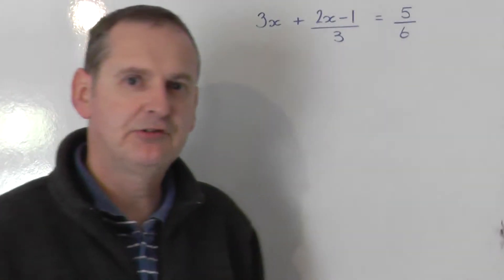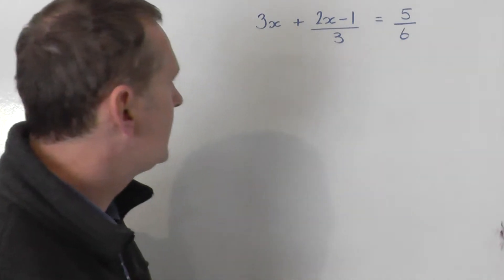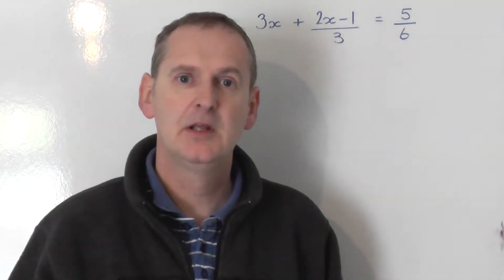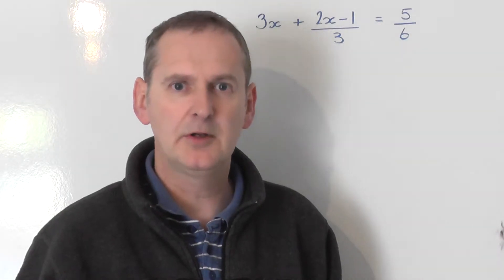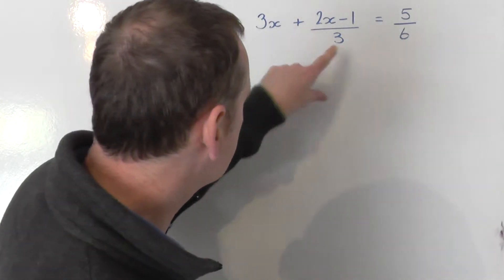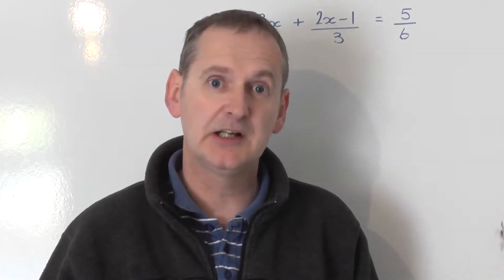Let's solve the equation 3x plus 2x minus 1 over 3 is equal to 5 sixths. This equation is awkward for two reasons. One is obvious, it's got fractions - fraction there, fraction there - but perhaps less obvious is it's got a bracket in it.